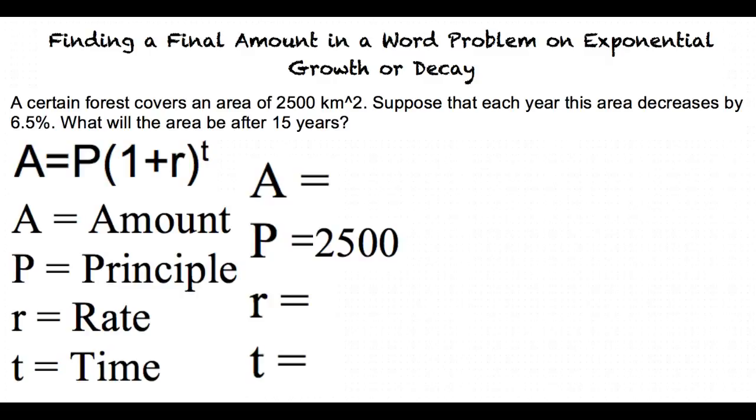r, the rate of growth, will be a negative value because it says the area is decreasing. We also need to convert the percent to a decimal. This gives us r is equal to negative 0.065.